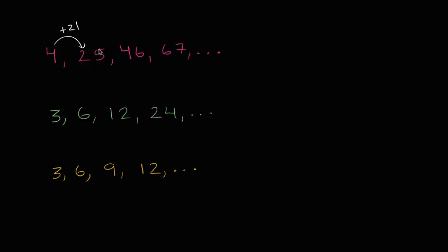If I were to go from 25 to 46, well, I could just add 21 again. So it looks like to go from one number to the next, I'm just adding 21. I'm just adding 21 over and over again. So that's going to be 46 plus 21 is 67.